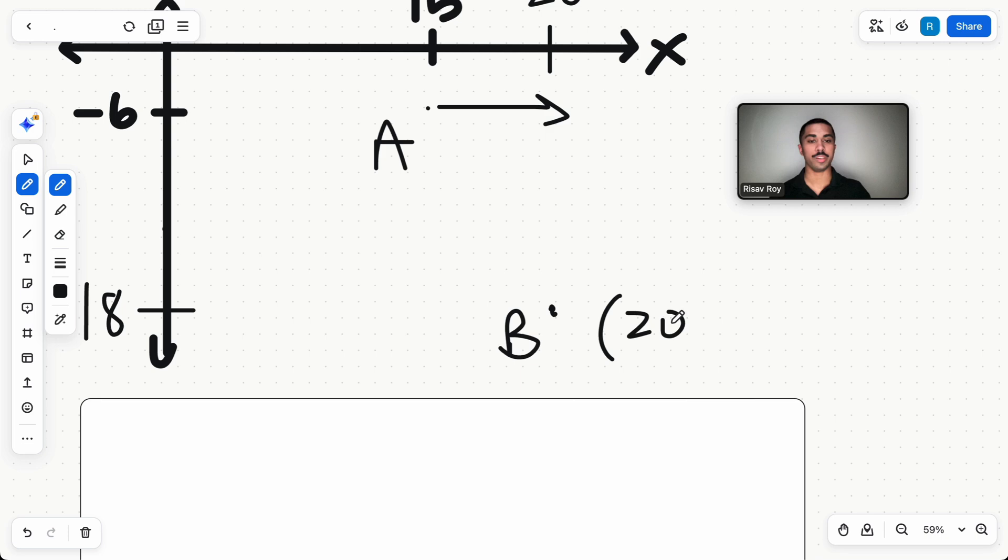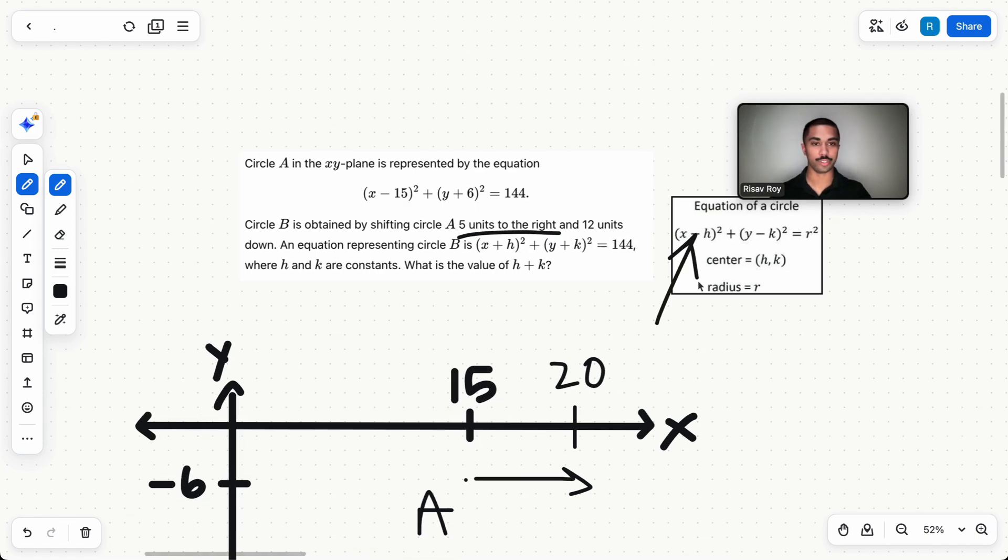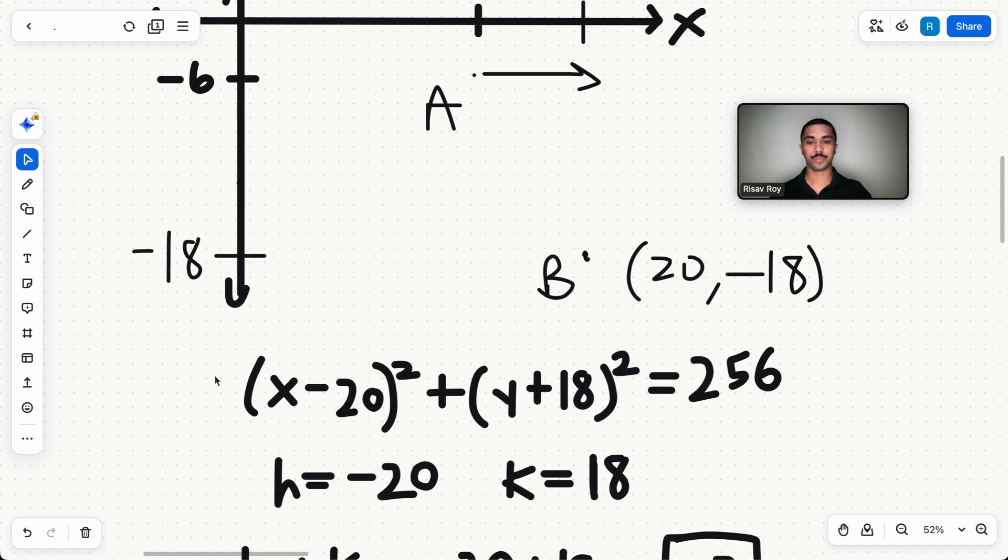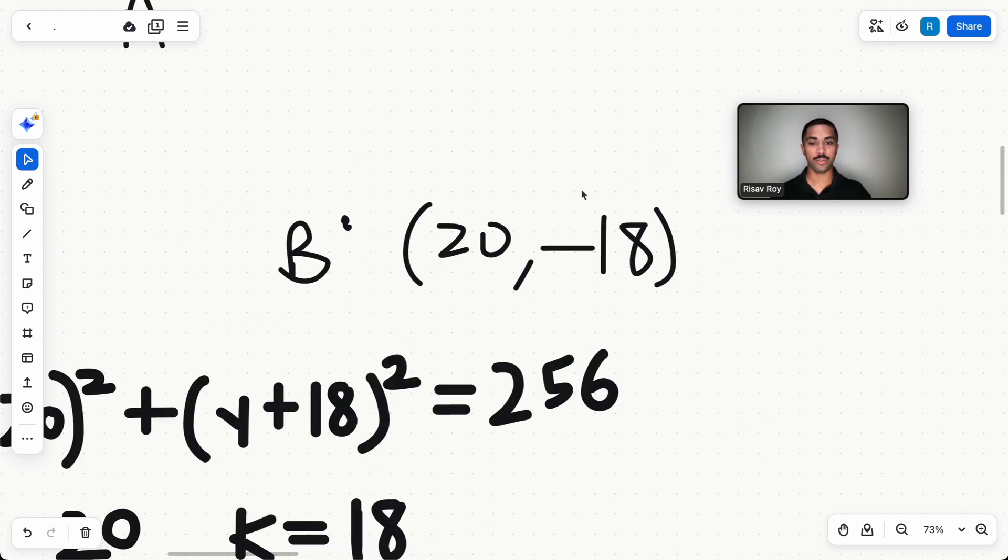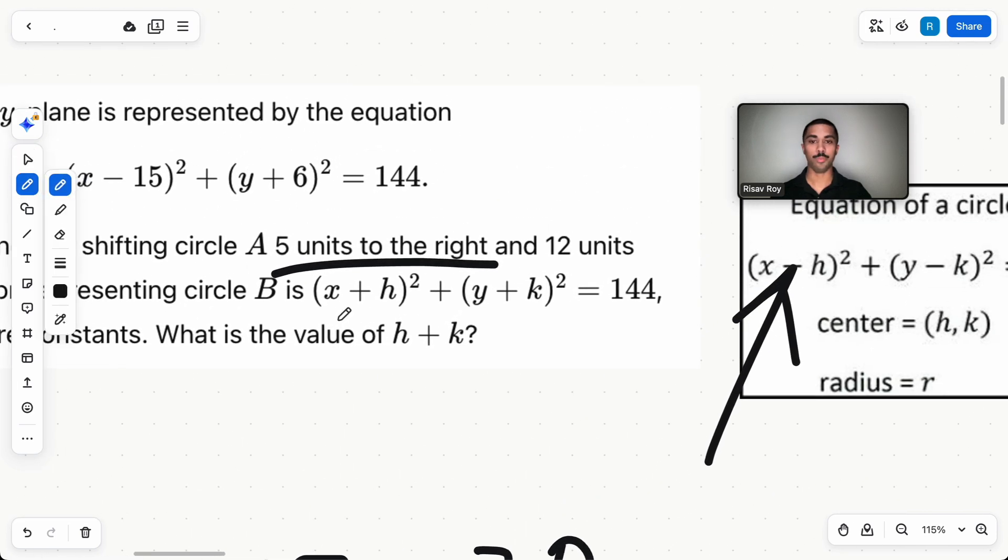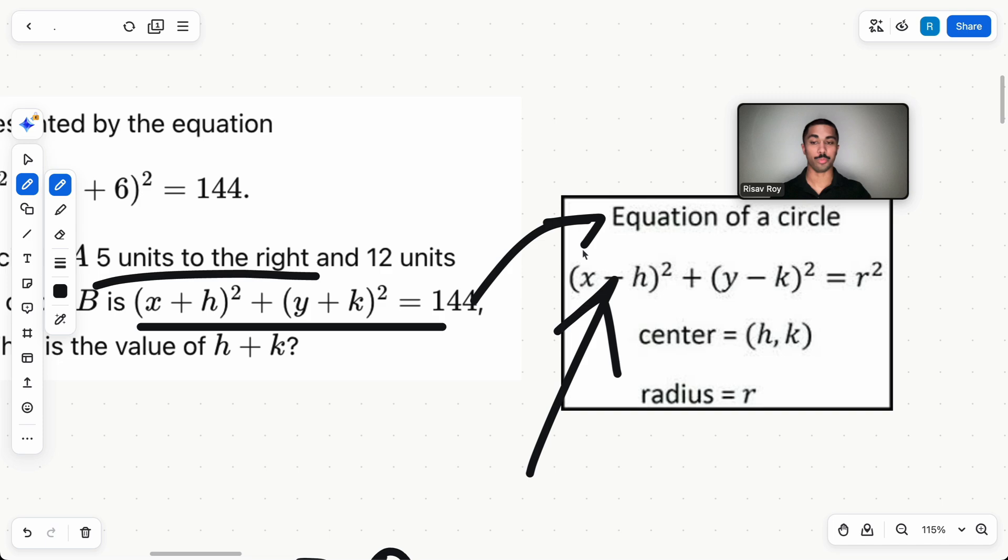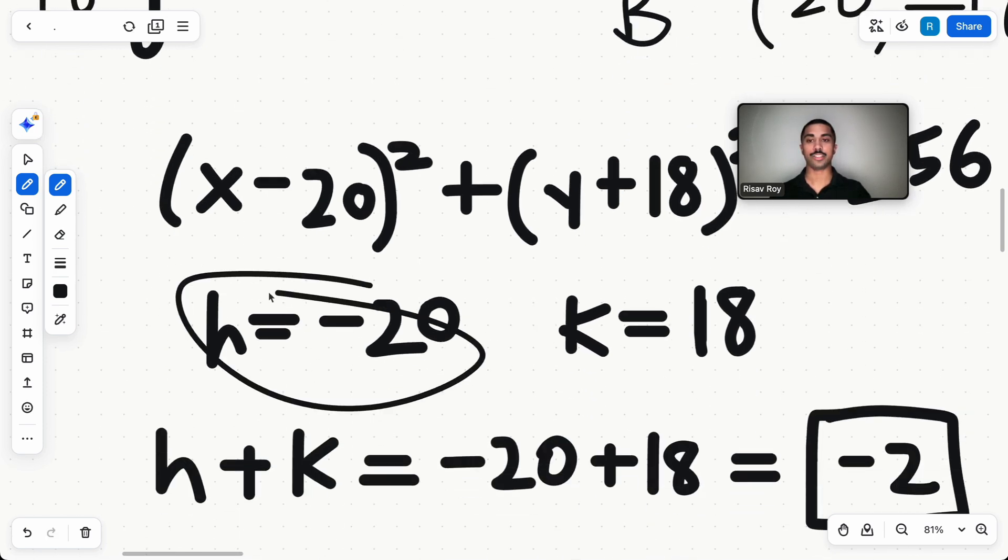So the center for B is going to be (20, -18). Pretty simple. What you want to do is ignore all of this right now. Just plug this in to your equation of a circle. What do we get? We get (x - 20)² + (y + 18)² = 144. Now, normally, h and k would be 20, -18. But the thing is that the SAT is trying to trick you. It's giving you a form that's very similar to the equation of a circle, but it's not. It's plus, right? So you want to match the SAT's format that it's giving you right now and to switch the signs.